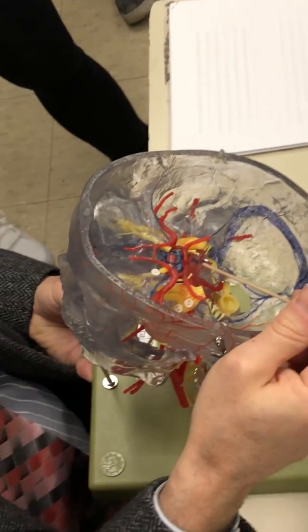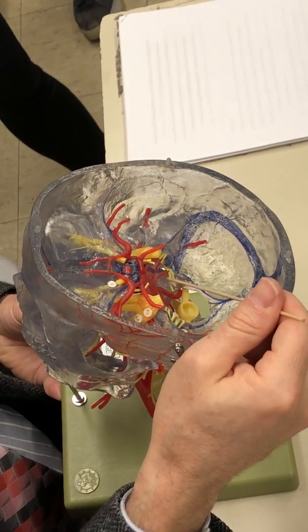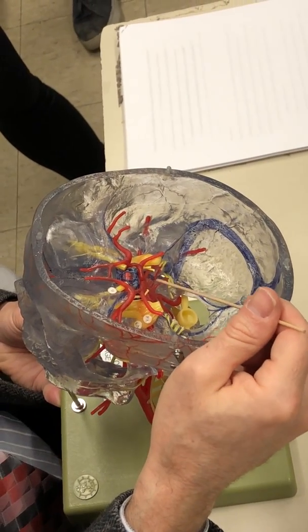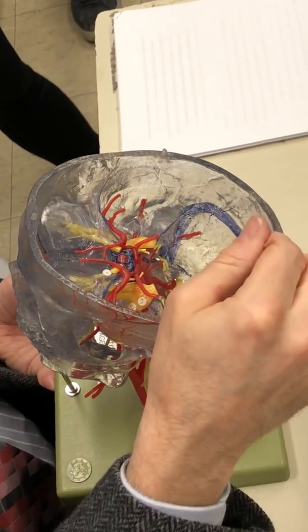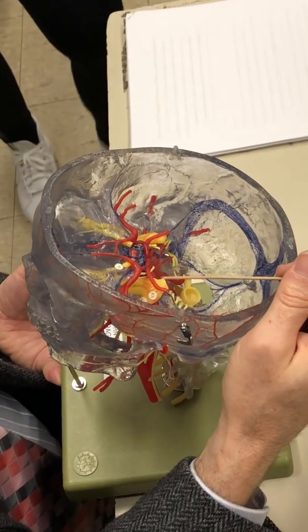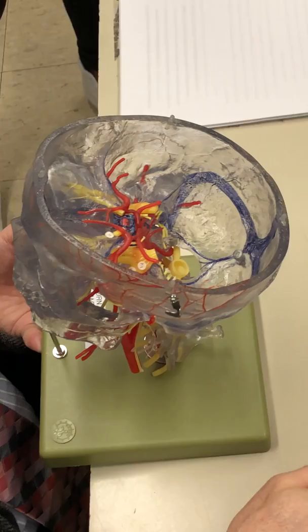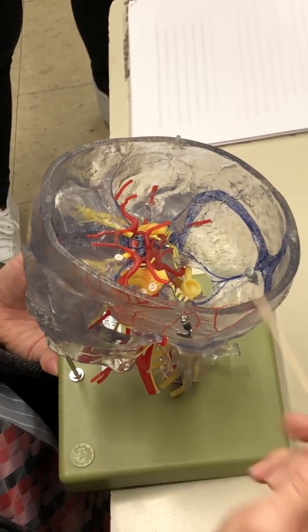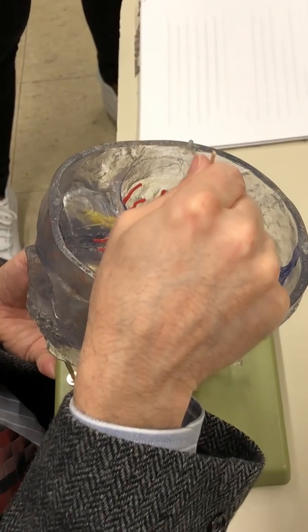We have some large vessels coming off of the basilar and maybe another large vessel coming off of the vertebral. The larger ones that are here would be cerebellar arteries supplying the cerebellum. Then the tiniest ones coming off of the basilar, those would be the pontine, they're supplying the pons.